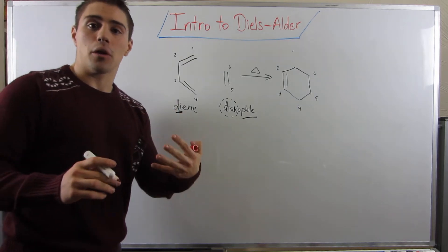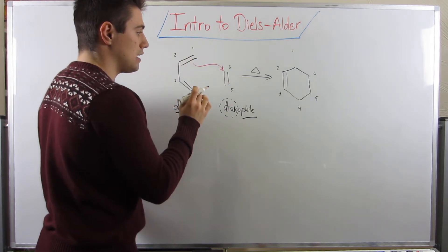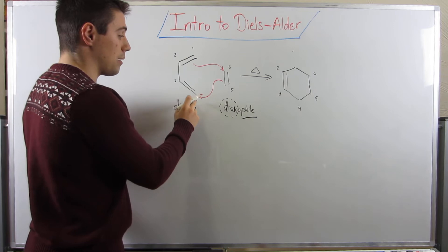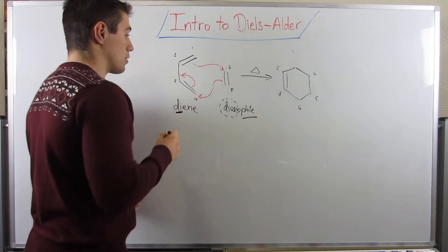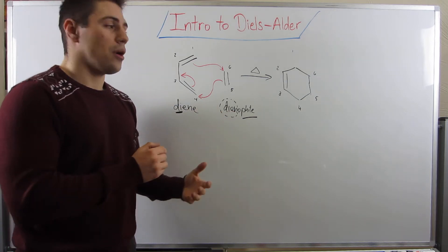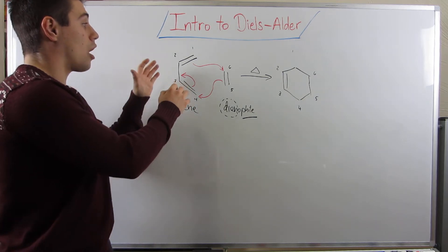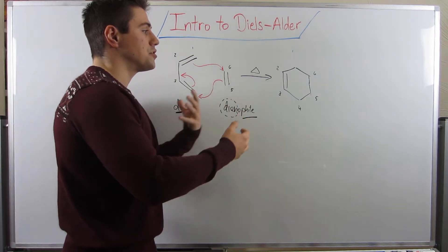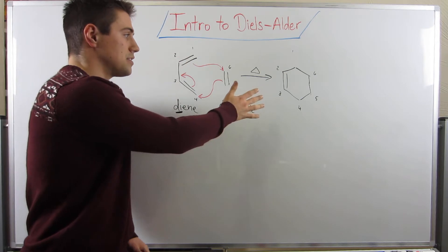To show you kind of how the arrows flow, this arrow, so I'm going to draw an arrow from this double bond, it's going to attach to this double bond right here. The double bond in the dienophile is going to come over and attach to the carbon at position four, and since this double bond has to move somewhere, he's going to get kicked up right there. Okay, so, yes, this is all good, it's a nice little introduction, but I want to kind of take it to the next level.